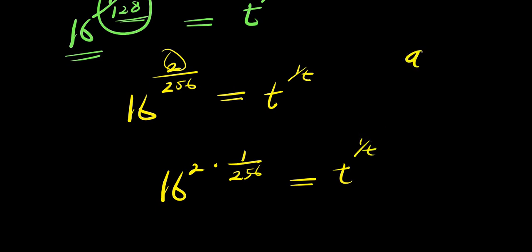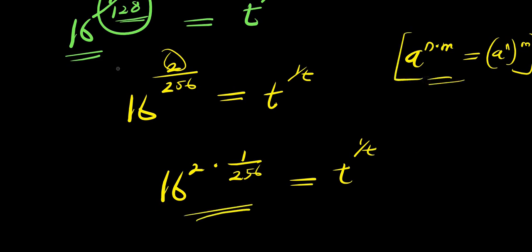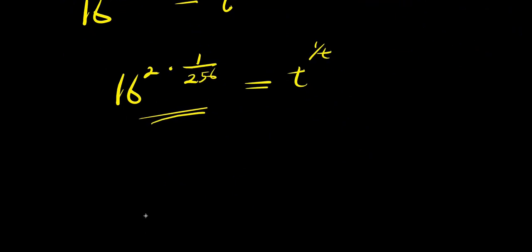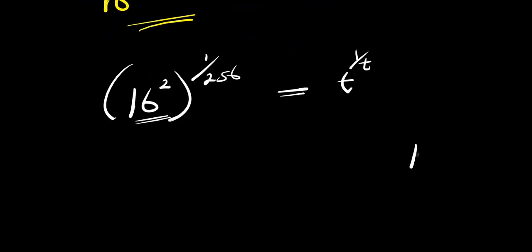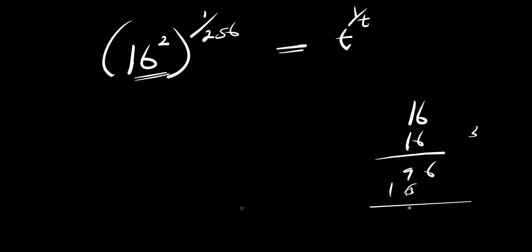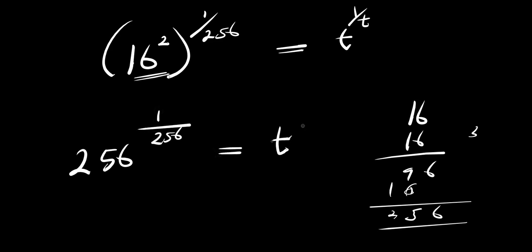And if you apply this identity again — a to the power of n times m equals a to the power of n, raised to the power of m — I'm simply going to have 16 to the power of 2, raised to the power of 1 over 256, and this equals t to the power of 1 over t. Now 16 to the power of 2 is simply 16 times 16. Multiplying out: 6 times 6 is 36, carry the 3; 6 times 6 plus 3 is 99; 1 times 6 is 6; 1 times 1 is 1. Adding up gives 256. So we are having 256 raised to the power of 1 over 256, and this equals t raised to the power of 1 over t.